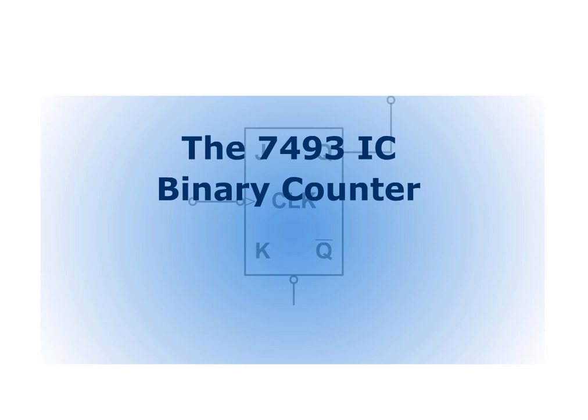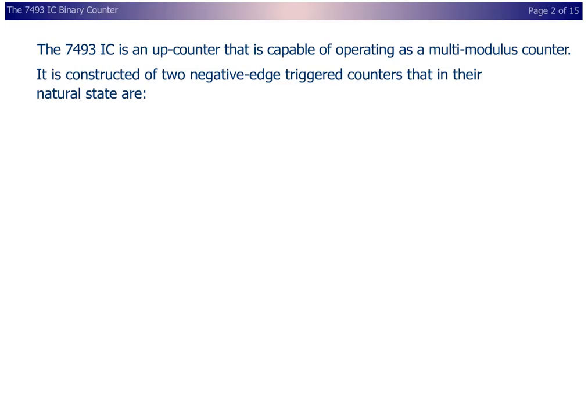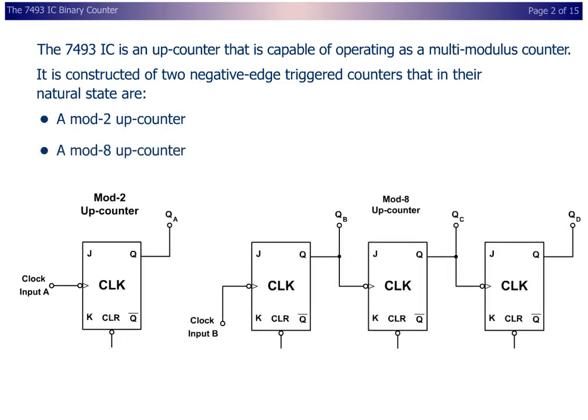The 7493 IC Binary Counter. The 7493 IC is an up-counter that is capable of operating as a multi-modulus counter. It is constructed of two negative edge-triggered counters that in their natural state are a mod-2 up-counter and a mod-8 up-counter.